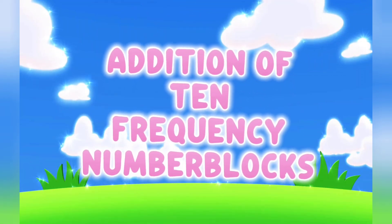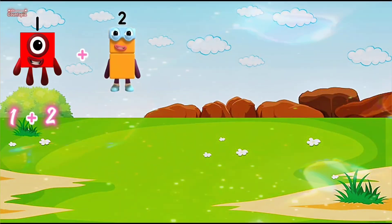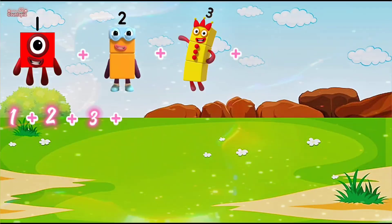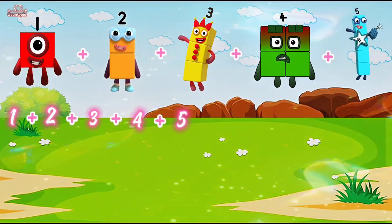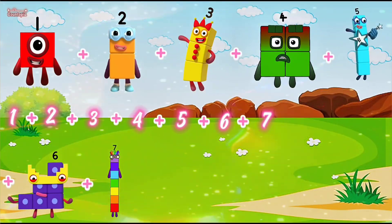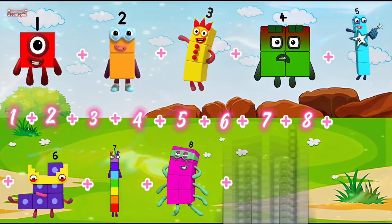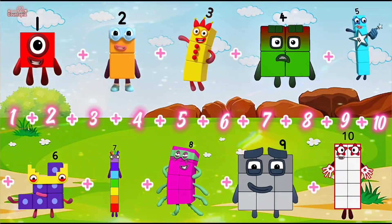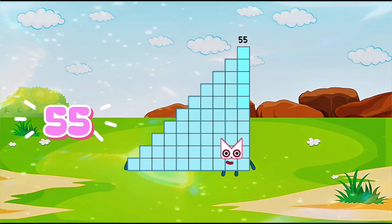Addition of 10 frequency number blocks: 1 plus 2 plus 3 plus 4 plus 5 plus 6 plus 7 plus 8 plus 9 plus 10 is equals to 55.